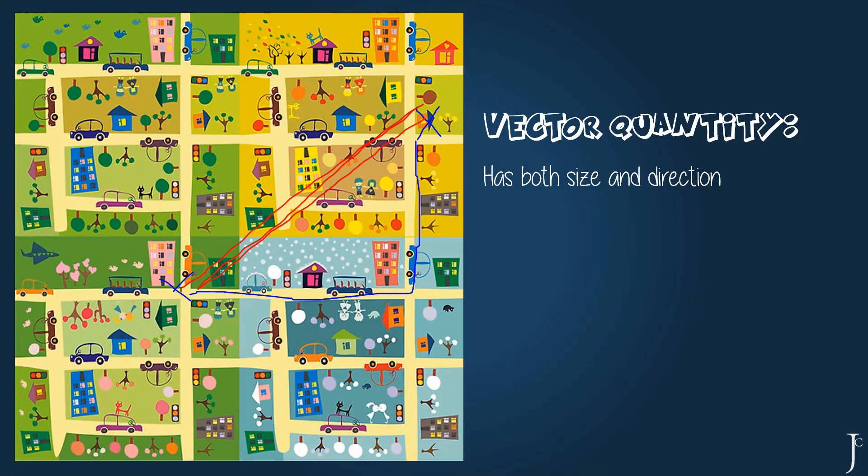In this case, it would be C squared equals B squared plus A squared. So if we use our measurements from before, it would be 50 squared plus 50 squared.